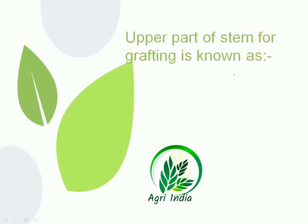Next question: the upper part of the stem used for grafting is known as — options are scion, stock, both, and none of these. Grafting is a technique in which two plants are combined so that characteristics of both parent plants are present. The scion is the upper part and the rootstock is the lower part. Hence the correct answer is scion.